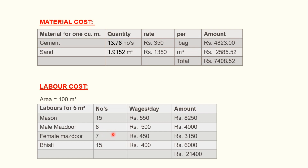I am dividing the 15 mazdoors into 8 male and 7 female. Wages per day: mason at 550 rupees, male mazdoor at 500 rupees, female mazdoor at 450 rupees, and bhisti at 400 rupees. Multiplying wages by number of workers: 15 × 550 = 8250, 8 × 500 = 4000, 7 × 450 = 3150, and 15 × 400 = 6000 rupees.